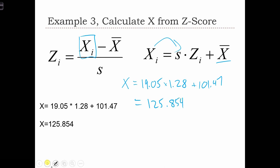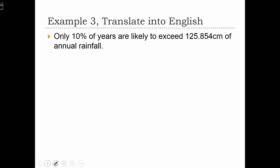Now we just need to write it: only 10% of years are likely to exceed 125.854 centimeters of annual rainfall.